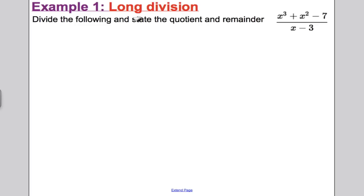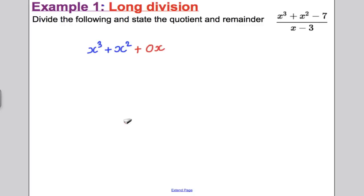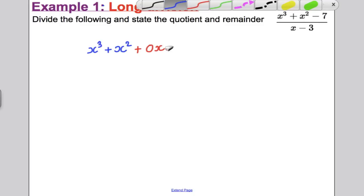Let's start with Example 1 by long division. This method relies on writing everything very neatly in columns. We're going to divide x³ + x² − 7 by x − 3, and state the quotient and remainder. We've got x³ + x². Now, we have no x's — it's very important you write that down, because this method relies on all terms being in their appropriate columns. Write everything in descending order and don't miss anything out. Minus 7.